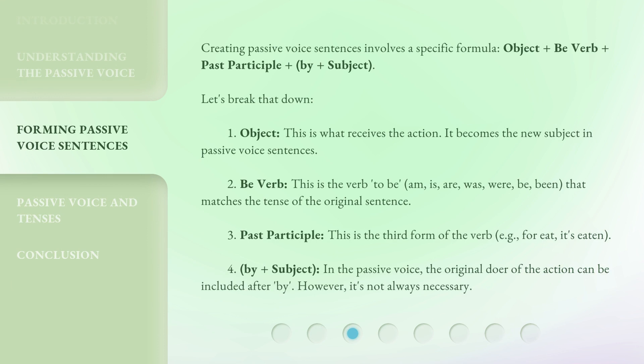Creating passive voice sentences involves a specific formula: Object + be verb + past participle + by + subject. Let's break that down. 1. Object — this is what receives the action; it becomes the new subject in passive voice sentences. 2. Be verb — am, is, are, was, were, be, been — that matches the tense of the original sentence. 3. Past participle — this is the third form of the verb; e.g., for 'eat,' it's 'eaten.' 4. By + subject — the original doer of the action can be included after 'by,' however it's not always necessary.